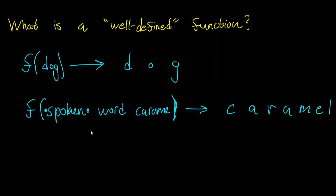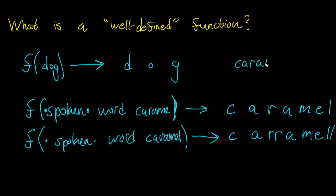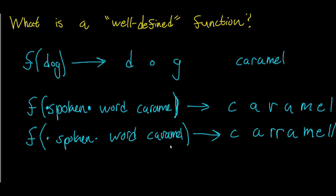But what happens if another person came along and they spoke into this function 'caramel'? And this function, trying to do its best to do its job — spoken word caramel — outputted c-a-r-r-a-m-e-l-l. Now, we know that when people say 'caramel' and 'caramel', they're talking about the same word, spelled c-a-r-a-m-e-l.